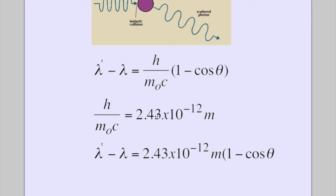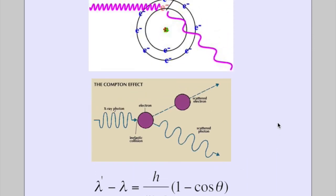When we substitute that back in, we get the change of wavelength equals 2.43 × 10⁻¹² meters times 1 minus cosine theta. Again, one more experiment that supports the particle theory of light.